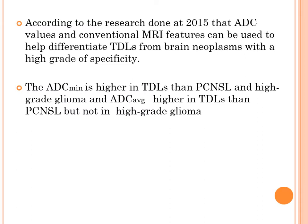The minimum ADC is higher in tumefactive demyelinating lesions than in primary CNS lymphoma and high-grade glioma — meaning minimum ADC value in TDL is higher than in high-grade brain neoplasms. The average ADC in tumefactive demyelinating lesions is also higher than in primary CNS lymphoma, but not compared to high-grade glioma like glioblastoma multiforme.